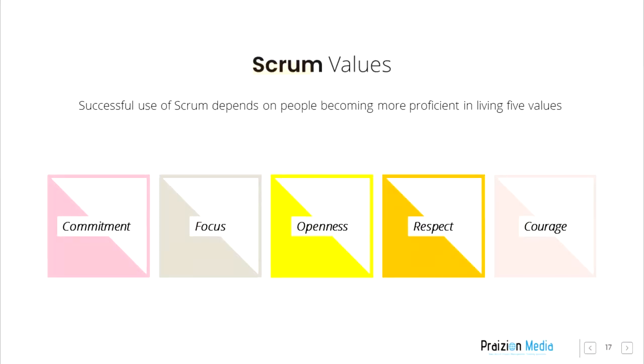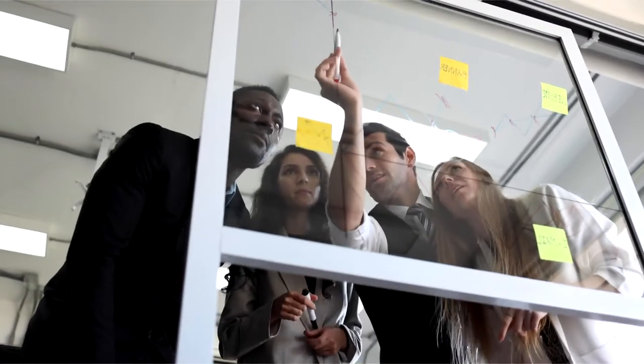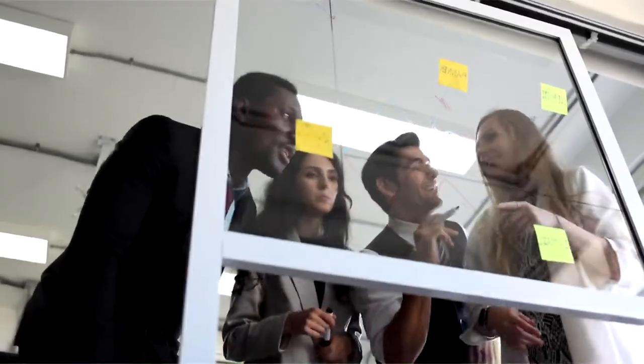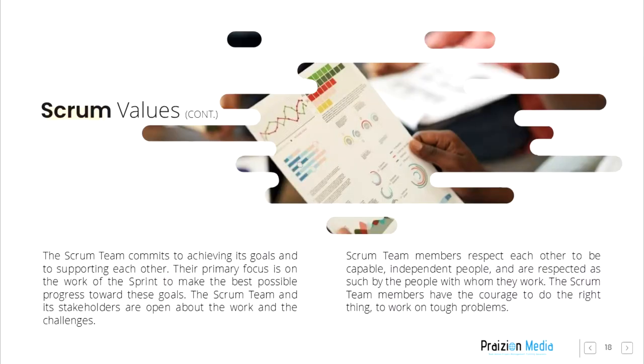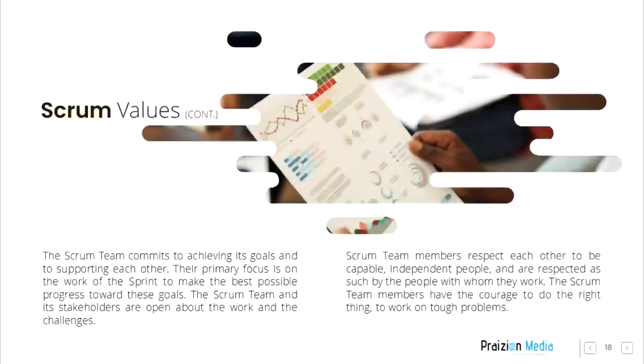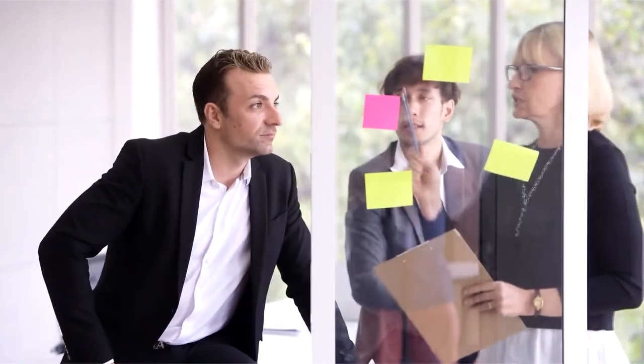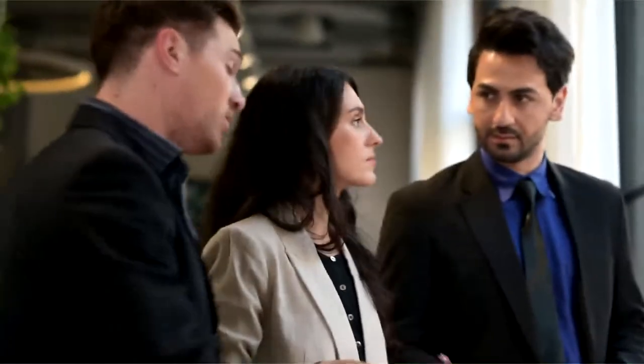Scrum values. Successful use of Scrum depends on people becoming more proficient in living five values: commitment, focus, openness, respect, and courage. The Scrum Team commits to achieving its goals and to supporting each other. The primary focus is on the work of the Sprint to make the best possible progress towards these goals. The Scrum Team and its stakeholders are open about the work and the challenges. Scrum Team members respect each other to be capable, independent people and are respected as such by the people with whom they work. The Scrum Team members have the courage to do the right thing, to work on tough problems.